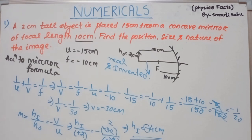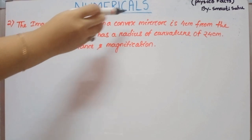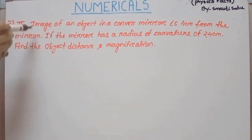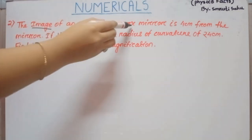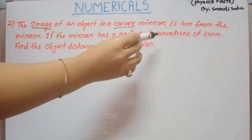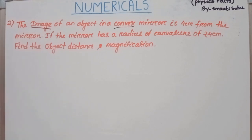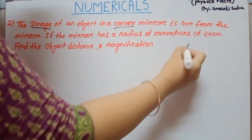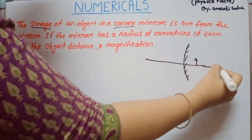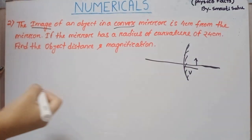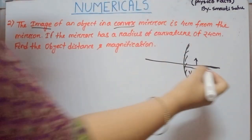Next question: the image of an object in a convex mirror is 4 cm from the mirror. The mirror has a radius of curvature of 24 cm. Find the object distance and magnification. For a convex mirror, the image is always virtual and erect. The image distance V = +4 cm. The radius of curvature R = 24 cm.